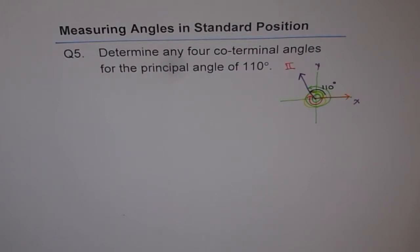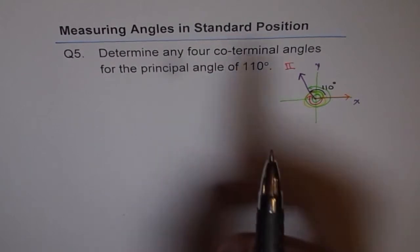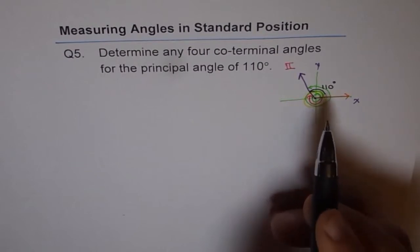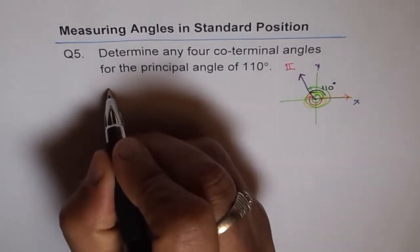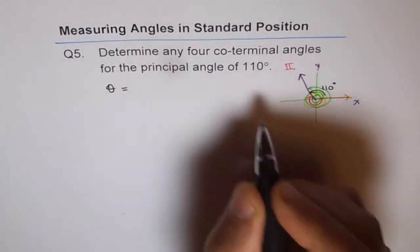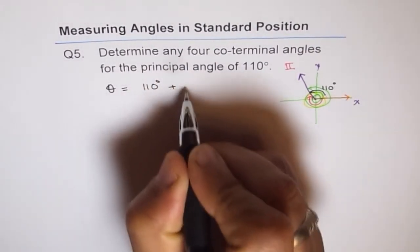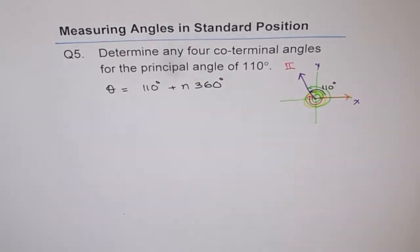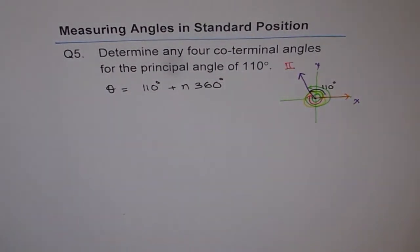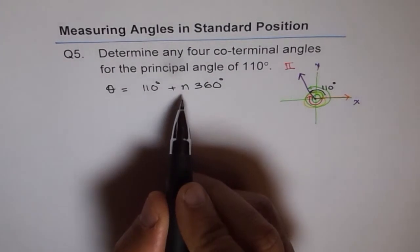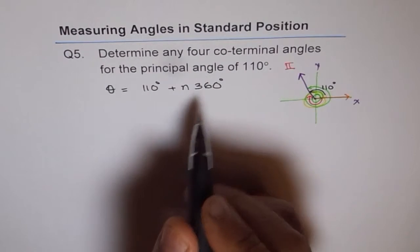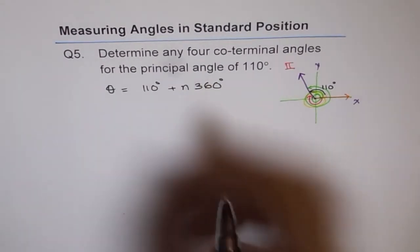You can actually find an infinite number of co-terminal angles. It is co-terminal because initial and final arms are the same for the two angles. Therefore, let us write the co-terminal angle theta as equal to 110 degrees plus N times 360 degrees. That is the best way of writing it generally. And then you can plug N as plus and minus 1, plus and minus 2 to get different answers.